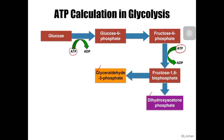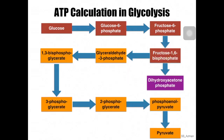From the investment phase we know that two ATPs are being used, so we need to remember that. Then we move to the payoff phase. In step 6, a redox reaction happens: glyceraldehyde-3-phosphate is oxidized into 1,3-bisphosphoglycerate, and one molecule of NAD+ is reduced into one molecule of NADH. This is a step where NADH is being produced.